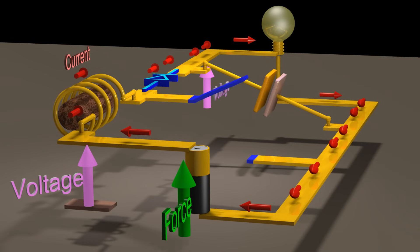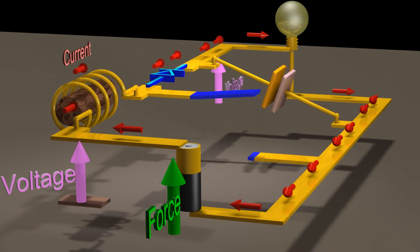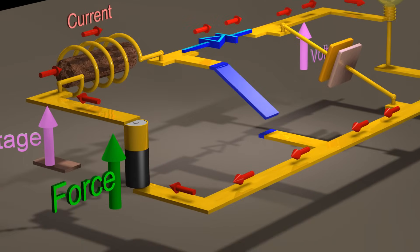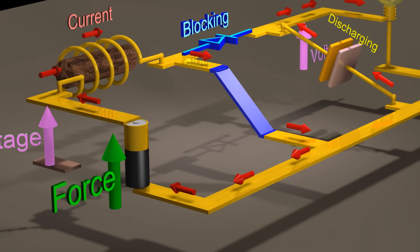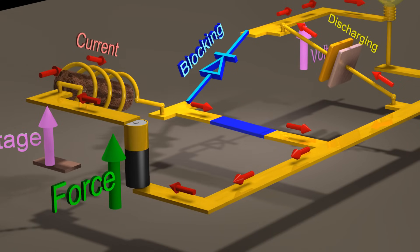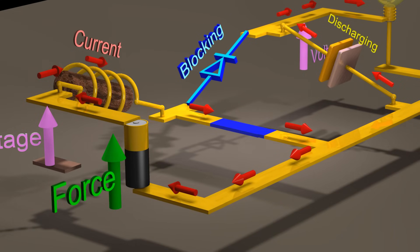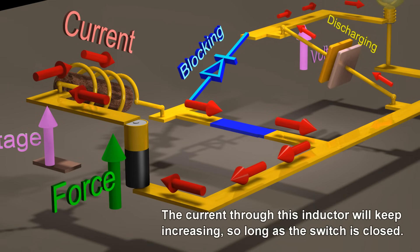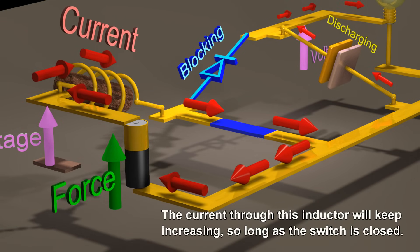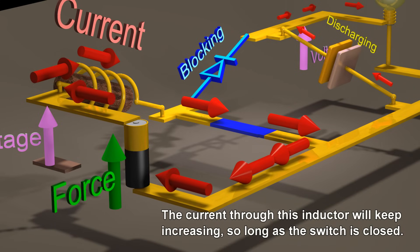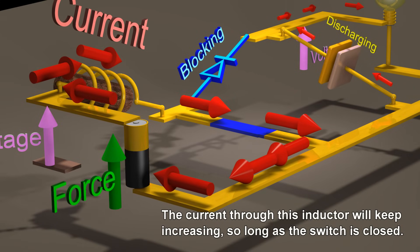If we close the switch, we will cause a DC voltage to appear across the inductor. The current through the inductor will keep increasing so long as the switch is closed.